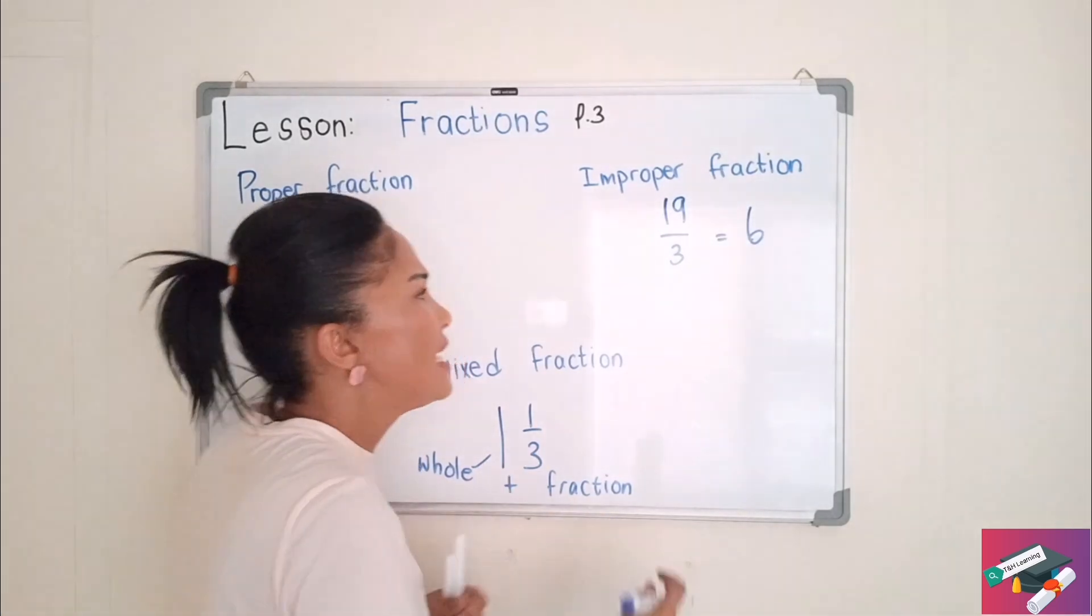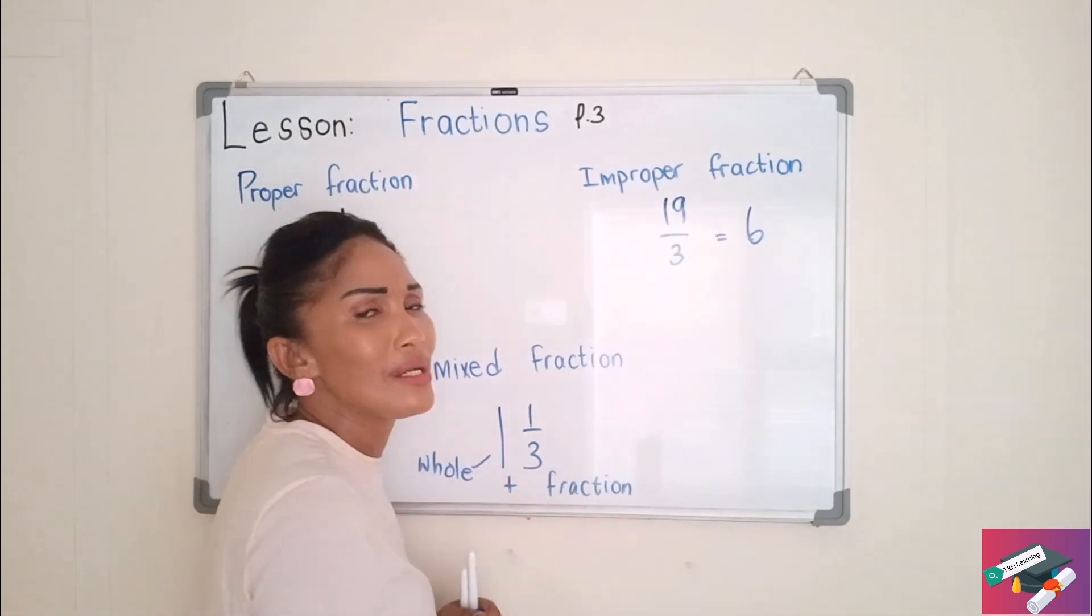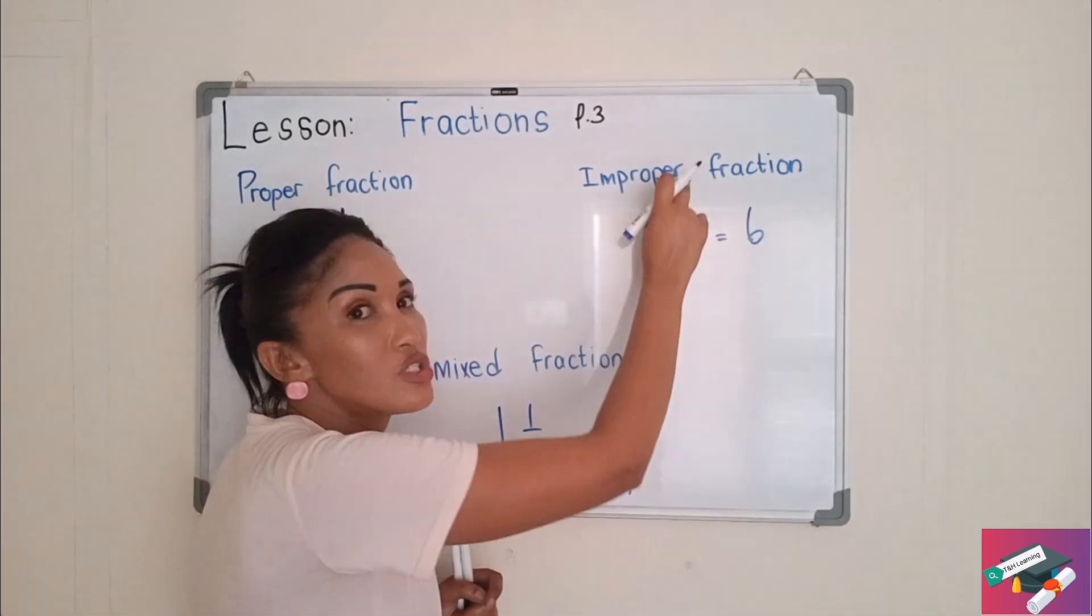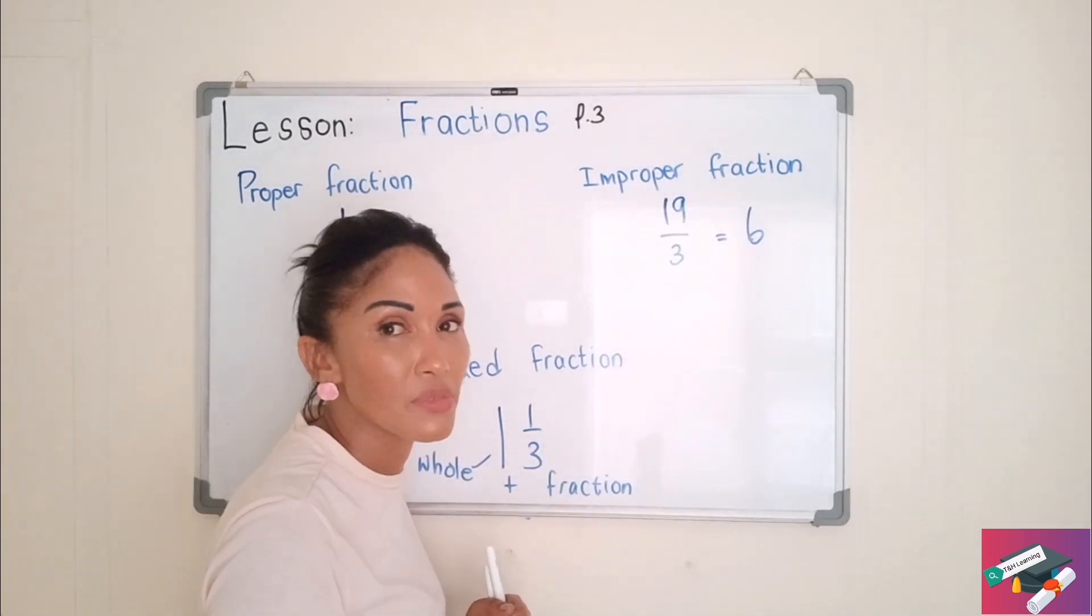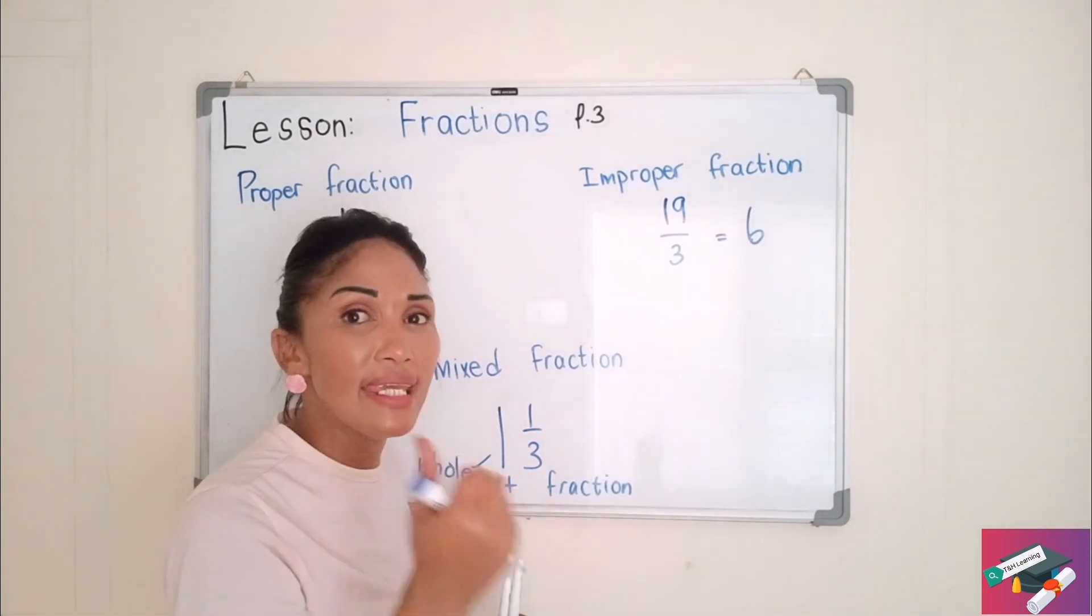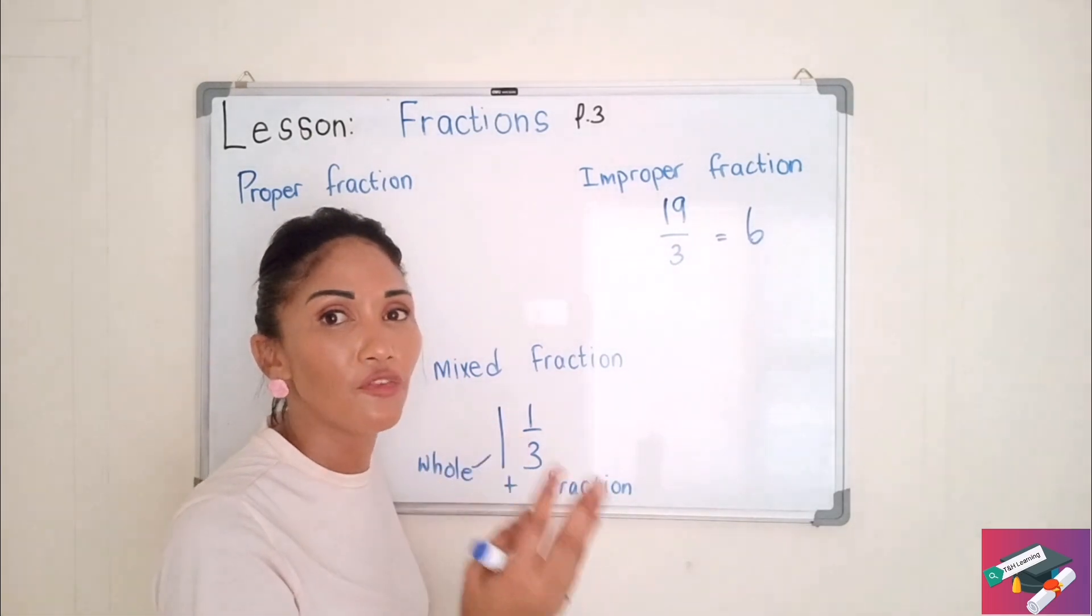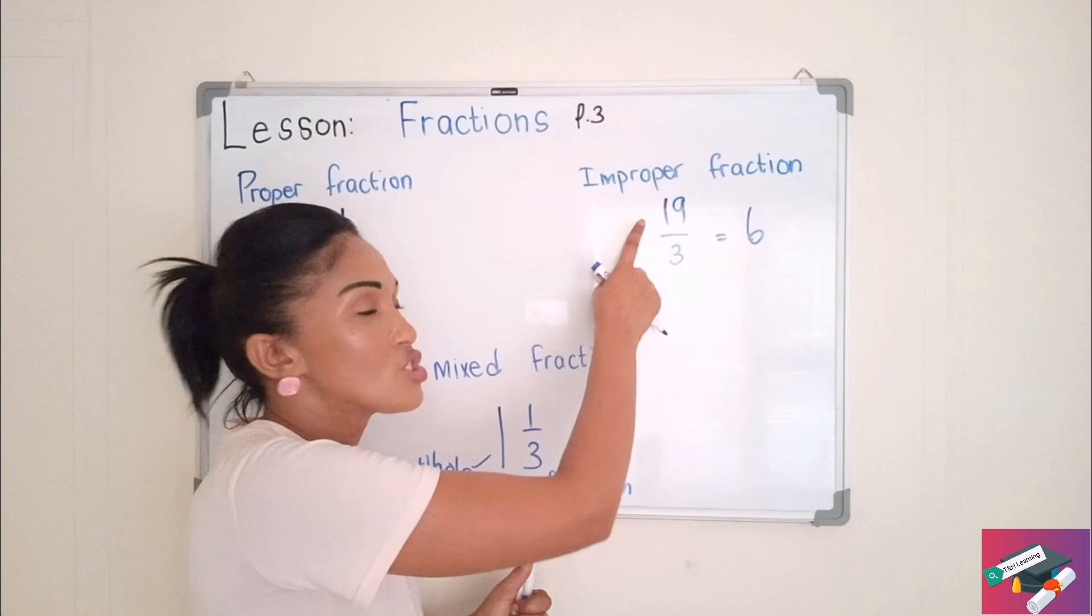So what is left? So 3 goes into 19, 6 times. So if you count, 3, 6, 9, 12, 15, 18. So we stopped at 18.